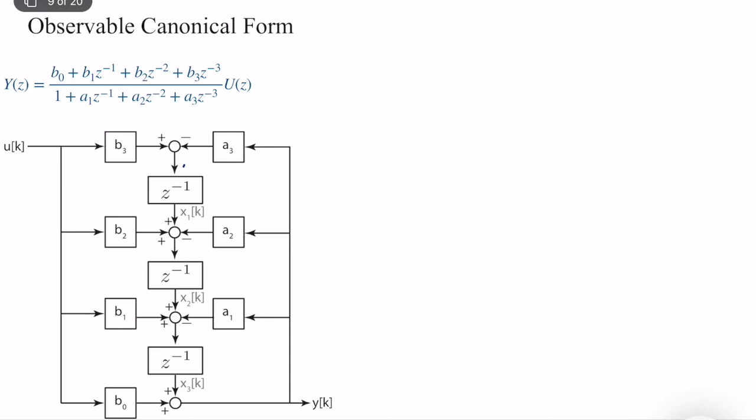Hello everybody. If you remember, in the last phase of the previous video lecture, I talked about controllable canonical form in state-space representation. Now I will talk about the dual form, which is called observable canonical form. So given a transfer function, we have different kinds of realization. One of the canonical realizations that we covered in the block diagram realization is this. I call it observable canonical realization because once we write a state representation, it will be in observable canonical form. Let's do it all together and try to better understand how we can do that.